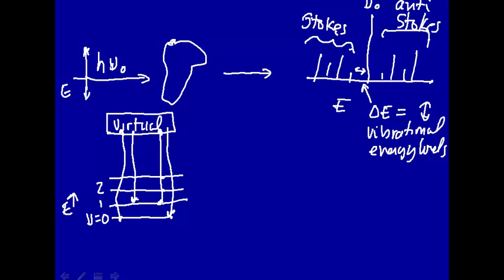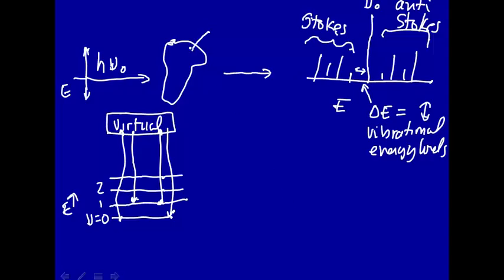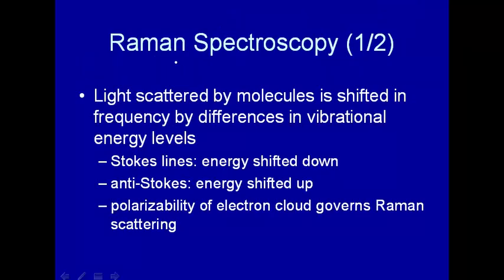So essentially you get a vibrational spectrum from the shifts in frequency from your incoming light. What governs this? It's the polarizability of the electron cloud around the molecule. Polarizability means how easily the electrons can move — or by what amplitude the electrons can move — in response to an oscillating electric field. Electrons that are very easily polarized will oscillate a lot, compared to electrons that are not easily polarized.